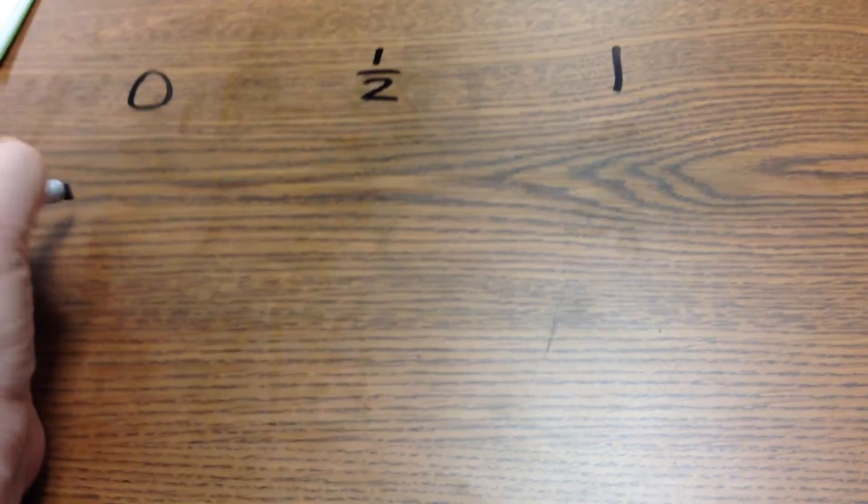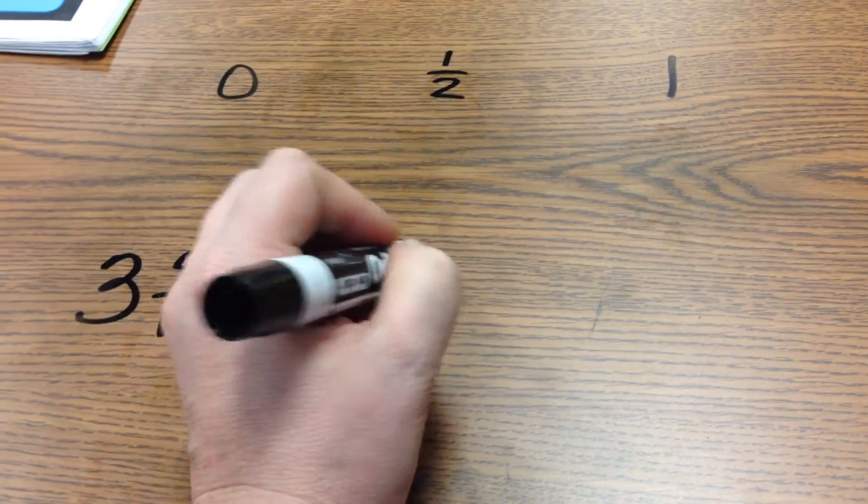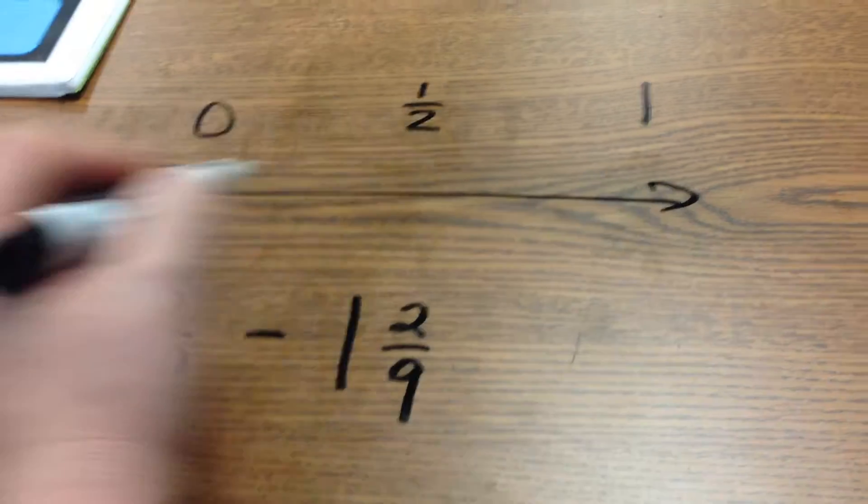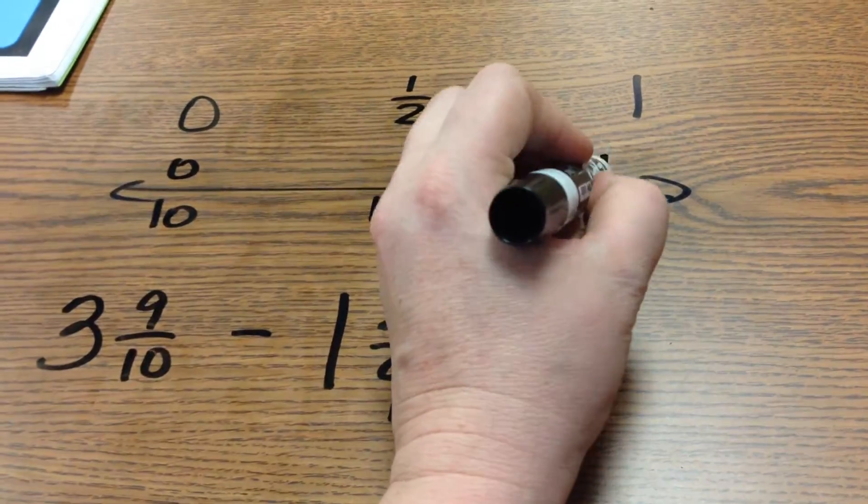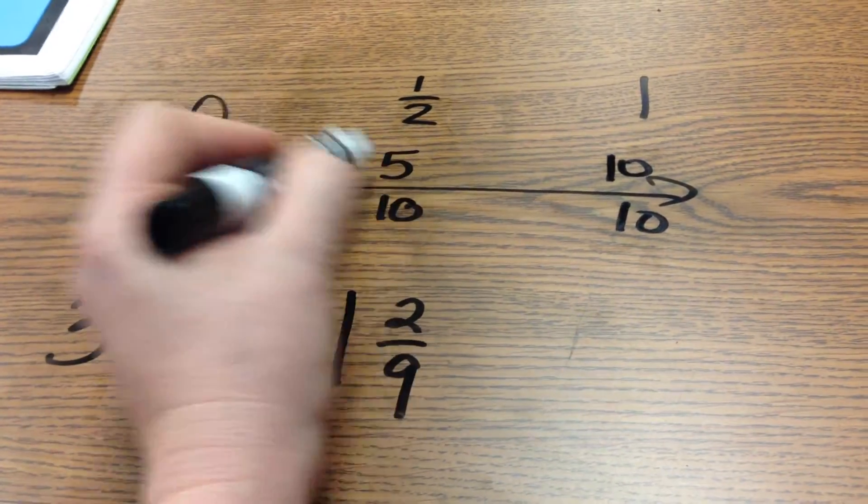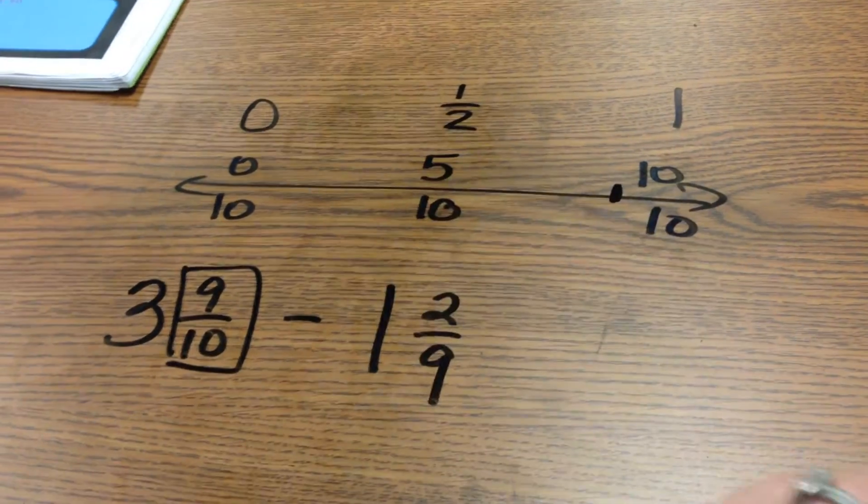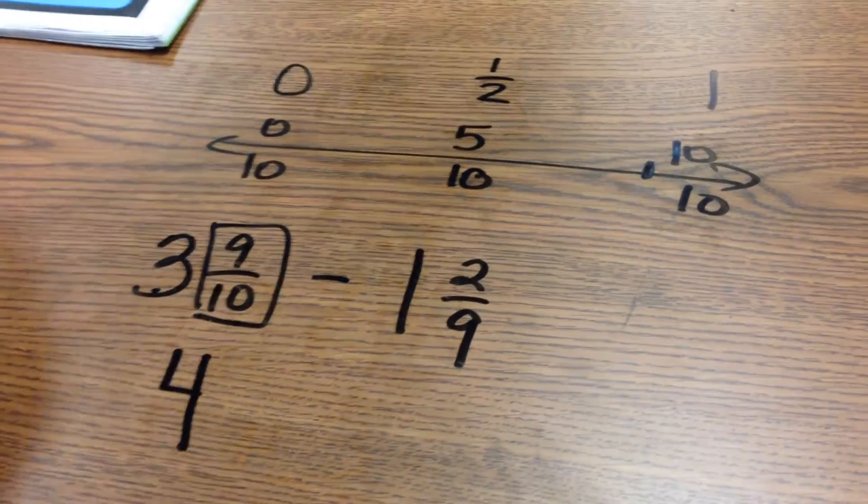The last one we're going to try together would be number three. I have three and nine-tenths minus one and two-ninths. For the first fraction, my denominator is a ten. So I'm going to make my little number line. Zero would be zero-tenths. One whole would be ten-tenths. Half of ten is five. So I'm looking at just the fraction part. Nine-tenths is closest to one whole. So three plus one. This would round to four.